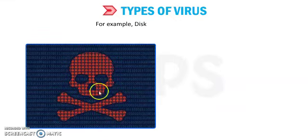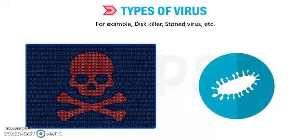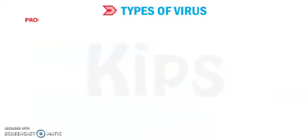Examples of boot viruses include Disk Killer, Storm virus, and others. These viruses become active at the time of booting the machine and affect the boot records of hard disk and floppy disk. Disk Killer, Storm virus, and other similar programs are examples of boot viruses.